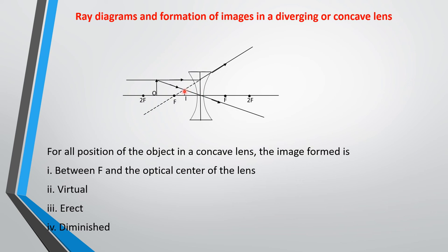For a diverging or concave lens: for all positions of the object, the image is always between F and the optical center. It is erect, diminished, and virtual. This is the ray diagram for it. A common examination question is: 'Draw the ray diagram to show the image formed by a diverging lens.' The image must always have these characteristics — virtual, erect, and diminished. You need to know how to draw ray diagrams for different positions of objects and the images formed.